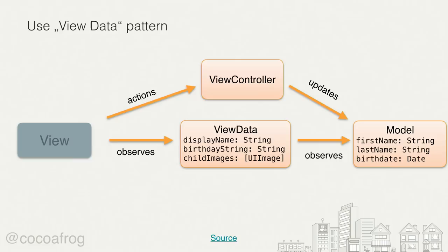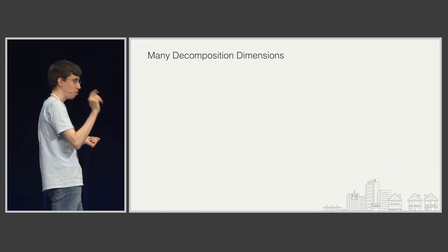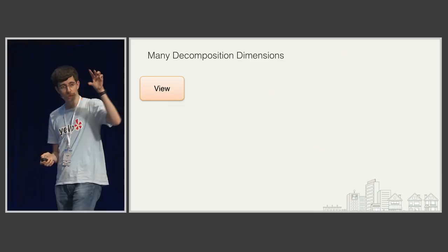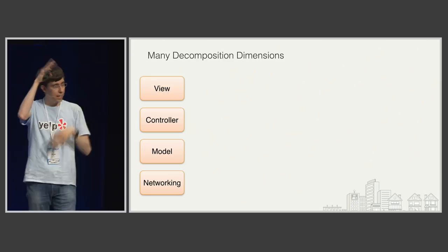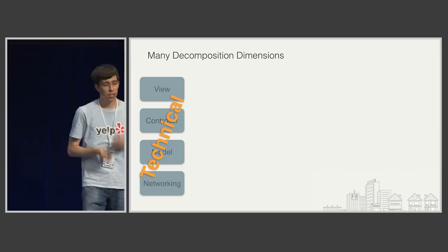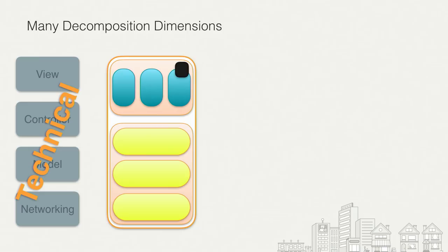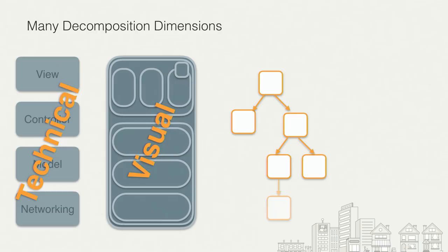Going back to higher-level thinking: we actually have many decomposition dimensions, and that's the main point. We're familiar with the technical dimension — view, controller, model, maybe networking as layers. But there are other dimensions to use. The visual dimension: your view might split into a top and bottom part, with a close button managed separately, and child view controllers inside. The domain dimension: articles and comments might appear on the same screen, but it still makes sense to manage them in separate controllers because they are separate types of objects.